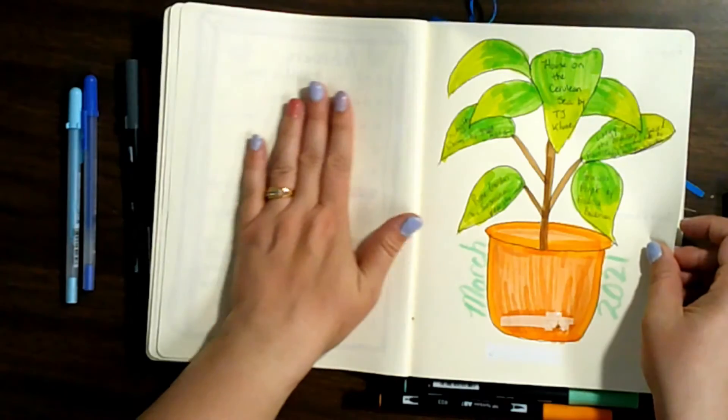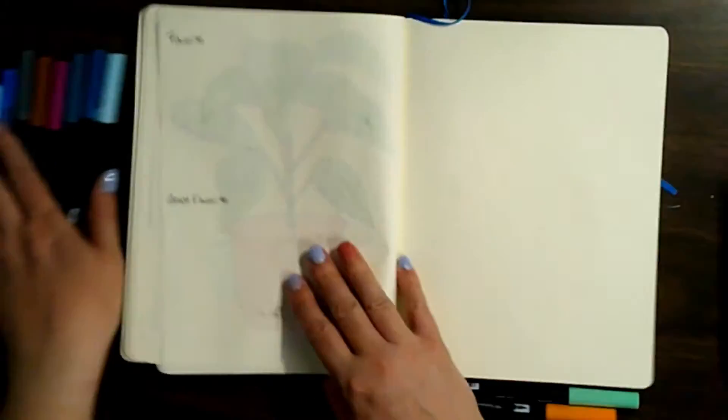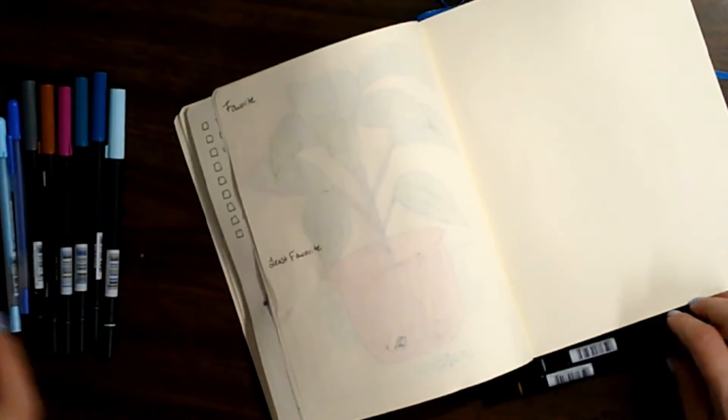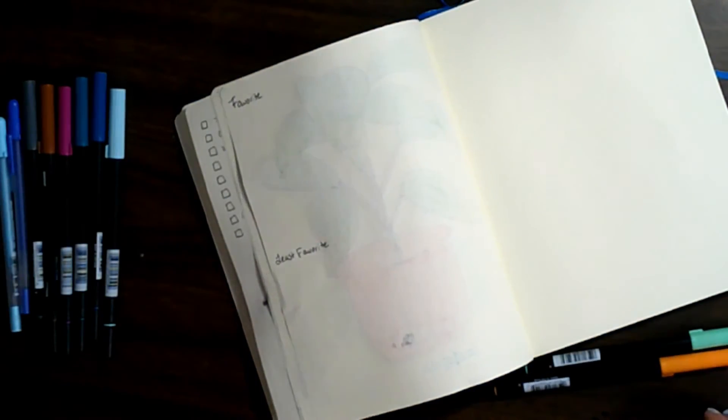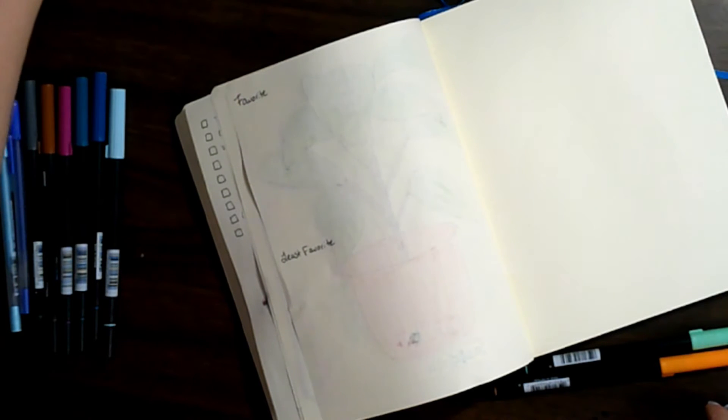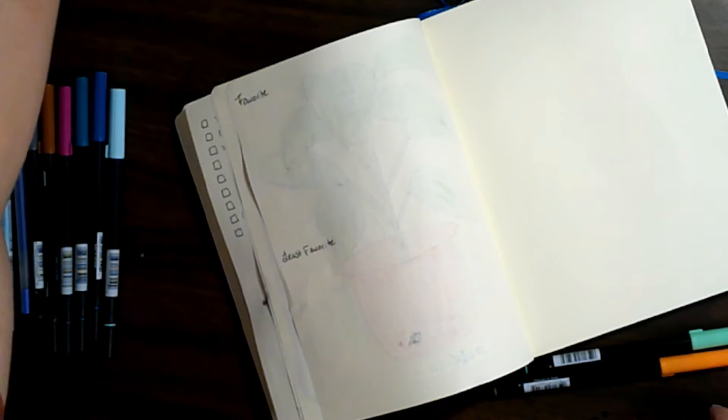So now I'm just going to write down the titles of my favorite and least favorite books. And then I will go through and kind of write about them a little bit more later. Trying to decide what color I want to use. All right. I'll do a green and orange.